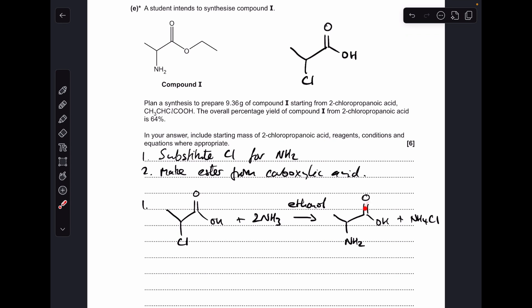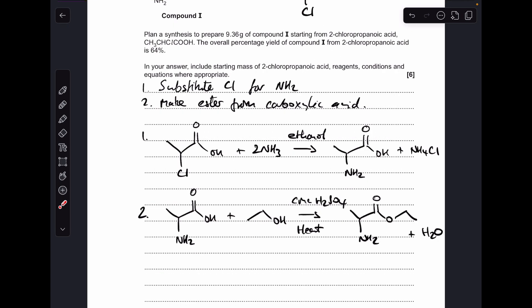And then for part 2, we need to convert this into the ester group, but it's an ethyl ester group, so we need to react it with ethanol in the presence of a concentrated sulfuric acid catalyst, and we're going to need to heat it. So there's the equation for part 2, and I just need to say that you could actually do that order the other way around. It doesn't have to be the way I've done it.